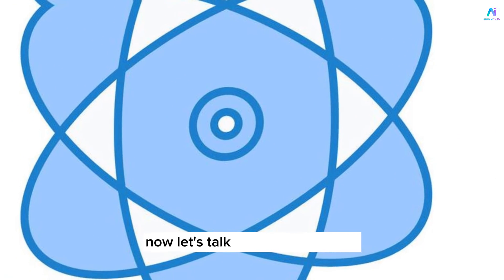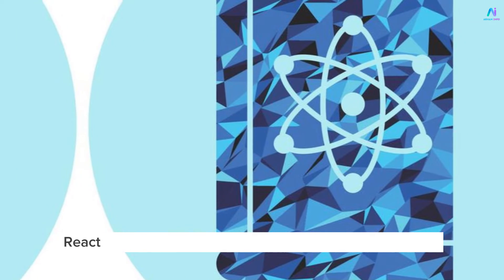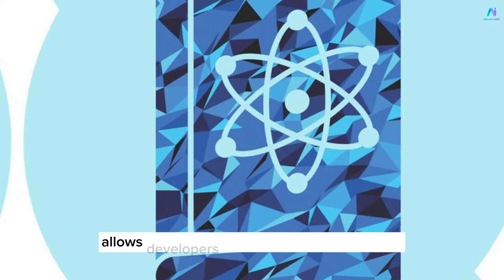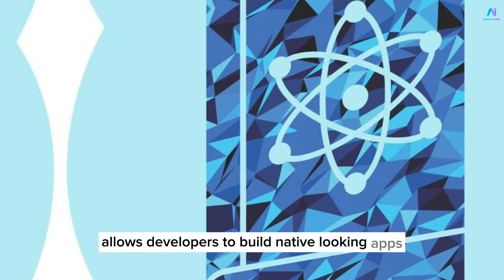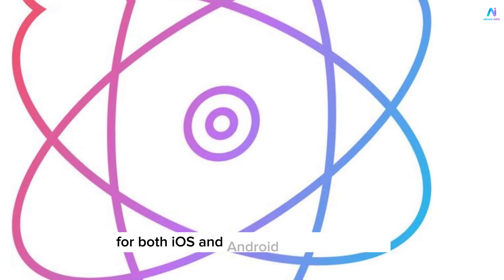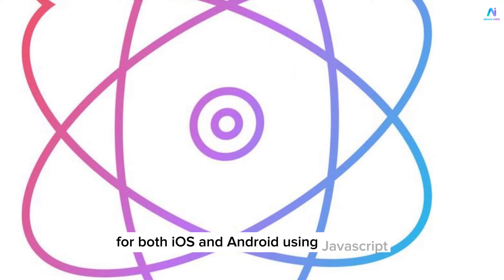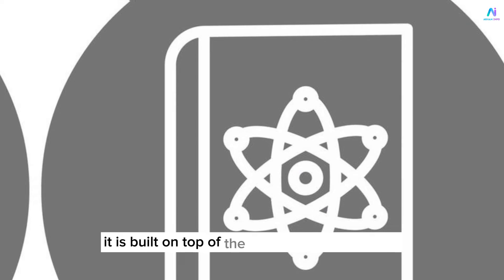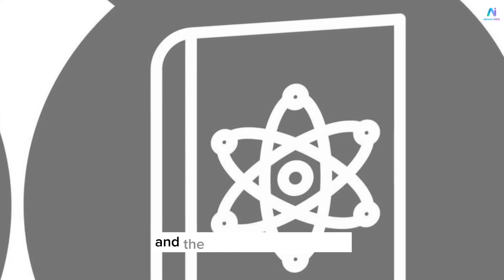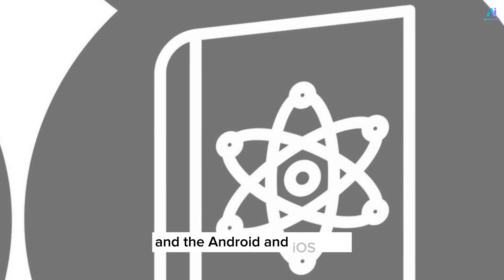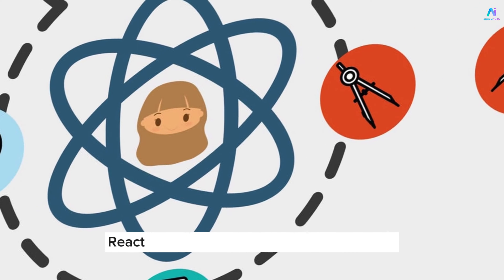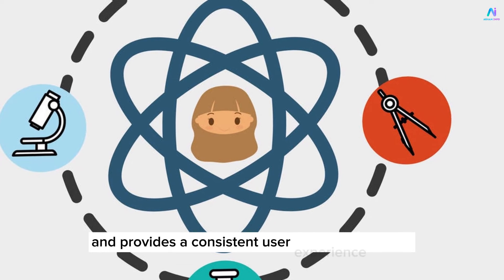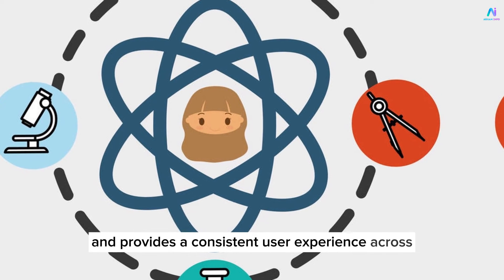Now let's talk about React Native. React Native is a mobile app development framework that allows developers to build native-looking apps for both iOS and Android using JavaScript and the React Native library. It is built on top of the React JavaScript library and the Android and iOS SDKs. React Native has a faster development cycle and provides a consistent user experience across all platforms.